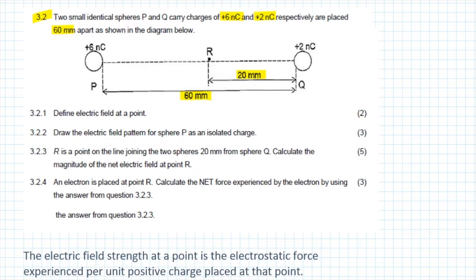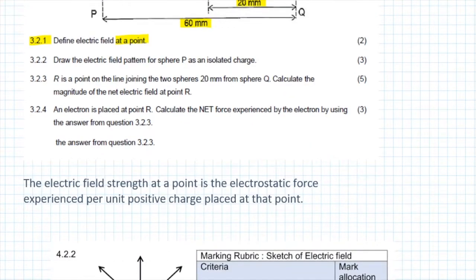Question 3.2.1 says: define electric field at a point. Very often learners, instead of defining electric field at a point, define just an electric field as a space or region of space in which you would experience an electric field or the electrostatic force. But in this case, we're specifically referring to an electric field at a point. So the correct answer to 3.2.1 is: the electric field strength at a point is the electrostatic force experienced per unit positive charge placed at that point.